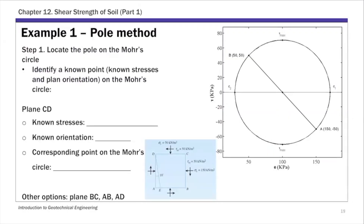For the pole method, remember there are two main steps: one is to locate the pole on the Mohr circle, and two is to use it to find stresses on any plane. For the first step, we want to locate the pole on the Mohr circle. To do that, we first need to identify a known point on the Mohr circle. For this problem, I'm going to use plane cD — a plane where we know the stresses and the plane orientation.